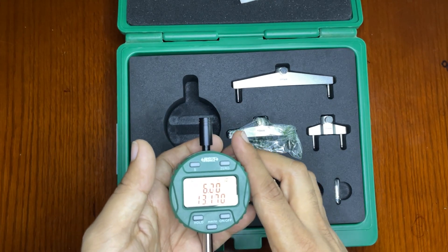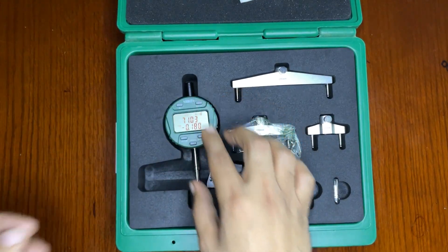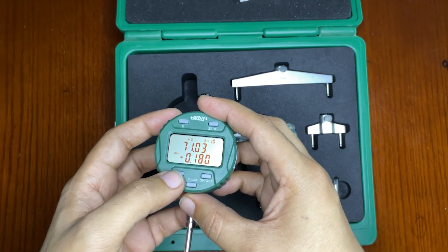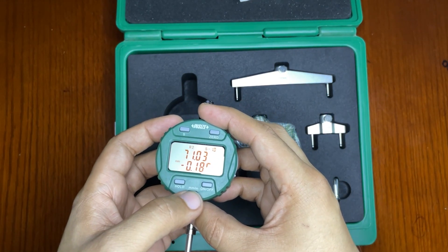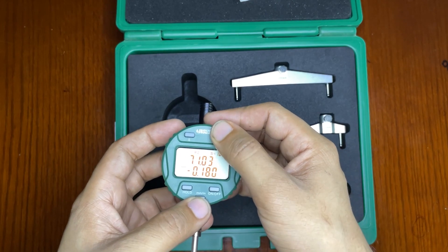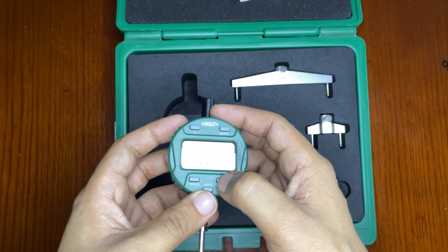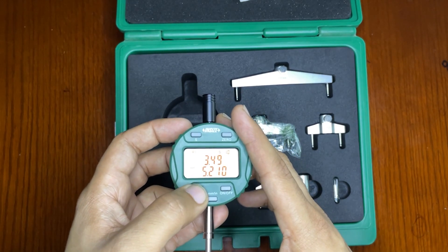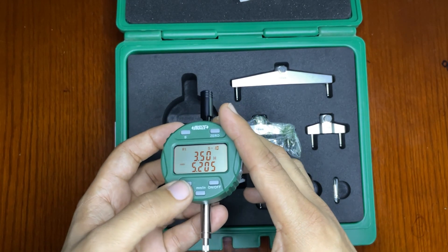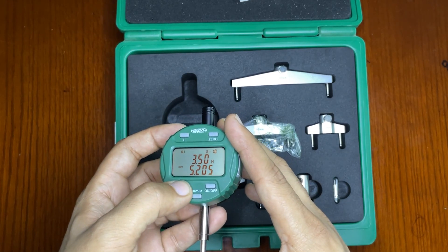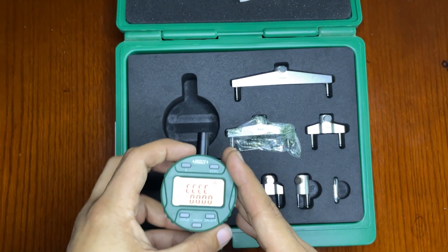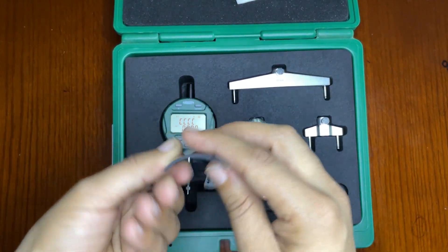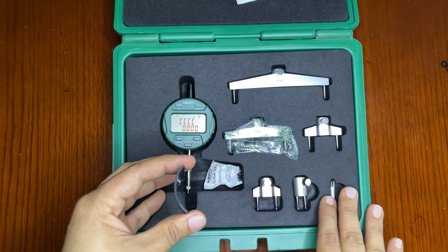Whichever arm we are using, we have to set the arm number. There's also a hold button, a millimeter to inches convert button, and of course a zero button for calibration. It's working fine. This is our job today: we will measure the inside and outside radius.